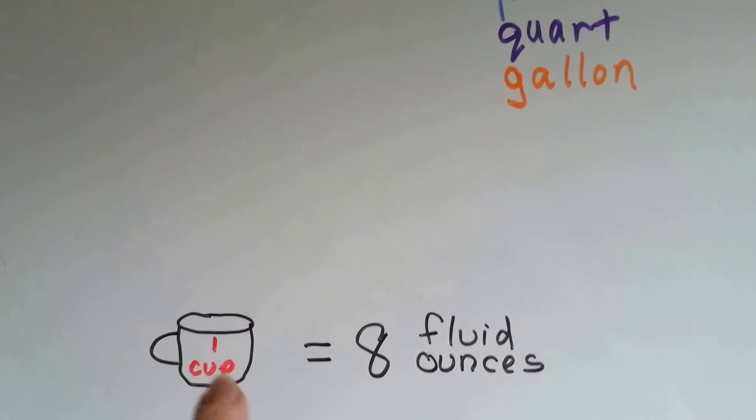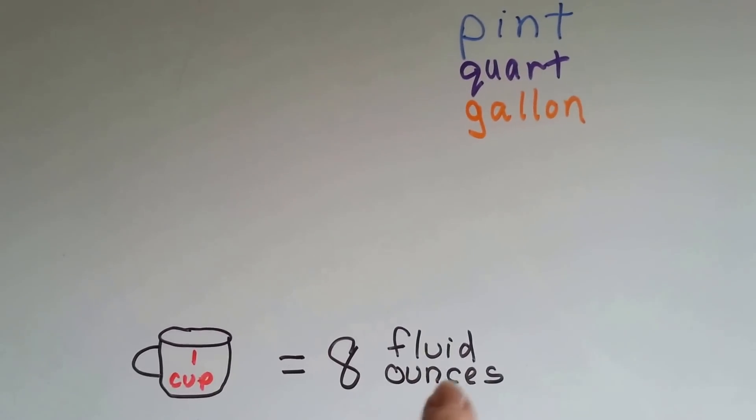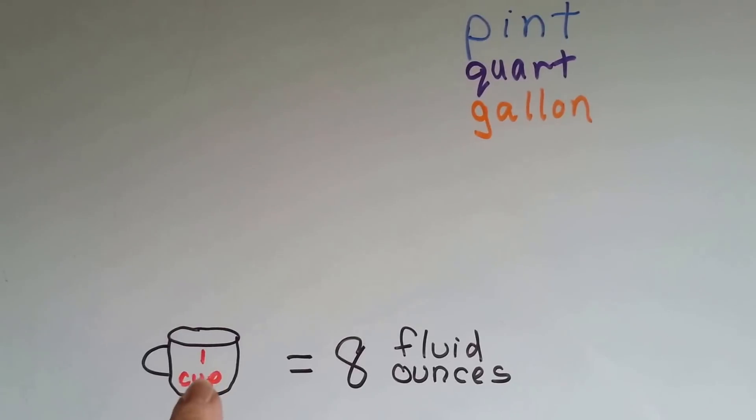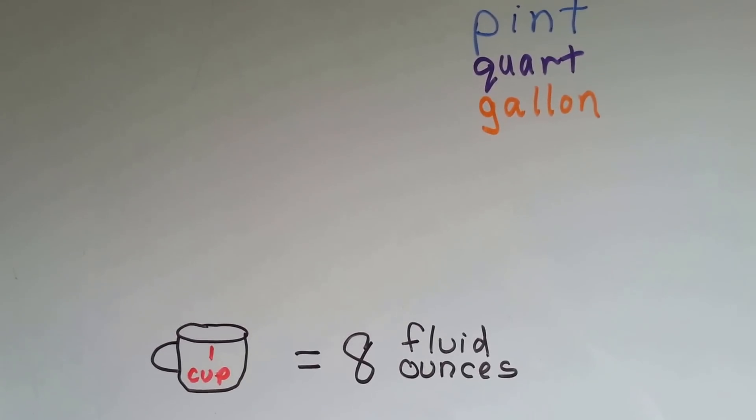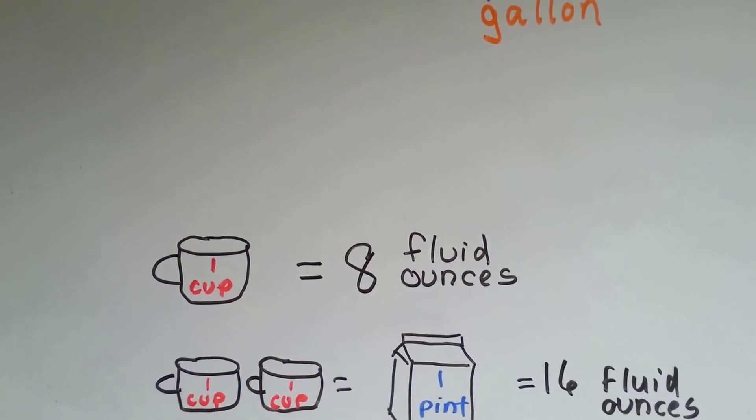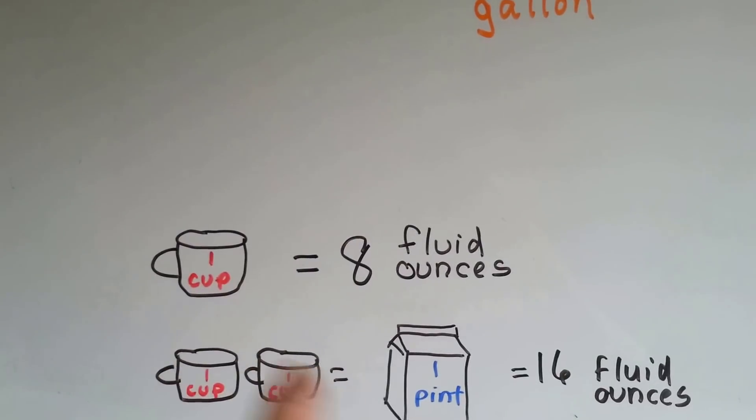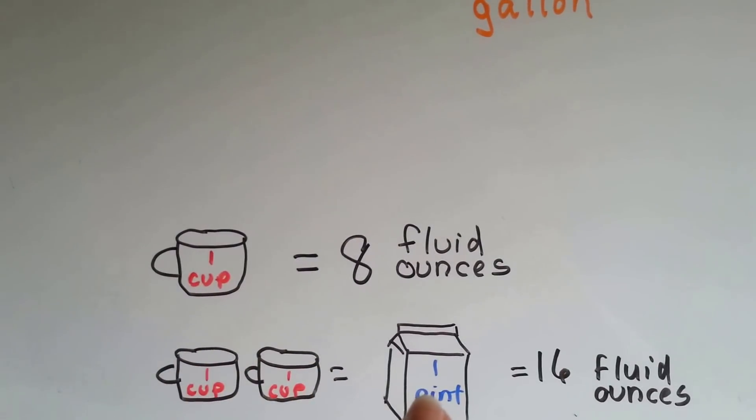One cup is equal to eight fluid ounces. Each cup has eight fluid ounces in it. If you had two cups, then it would be equal to one pint.